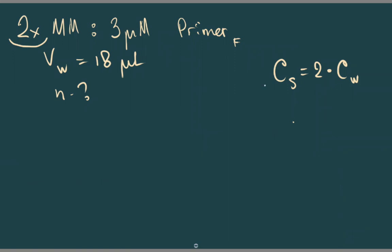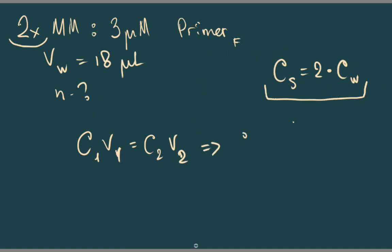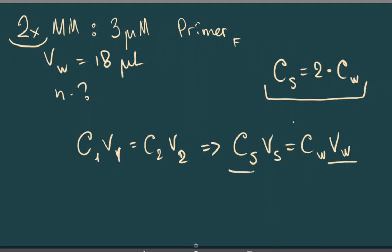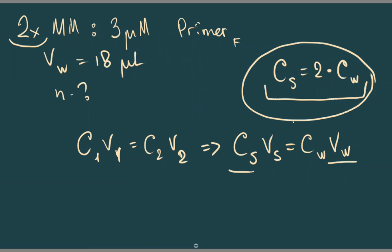From this we can put the equation into our dilution formula. Our formula was C1V1 equals C2V2, or C stock times V stock equals C working times V working. We know C stock and we know the working volume. When we substitute C stock from the 2x equation, it looks like 2 × C working × V stock equals C working × V working.